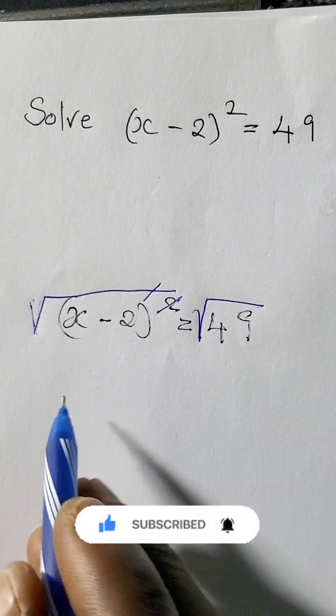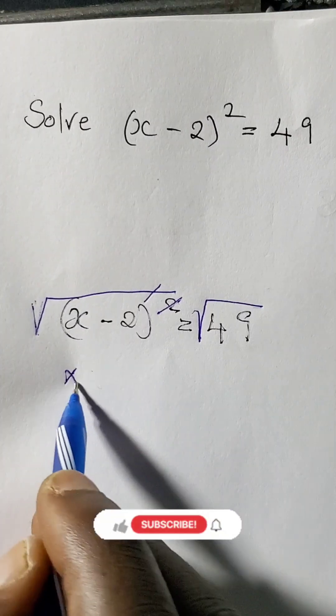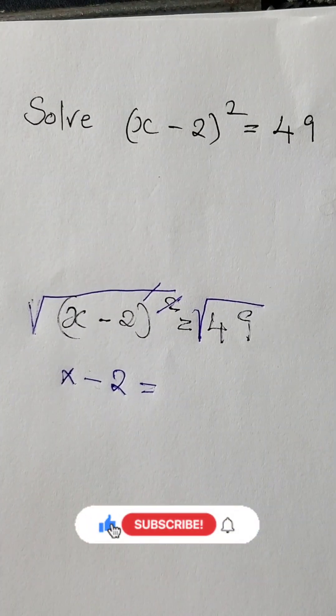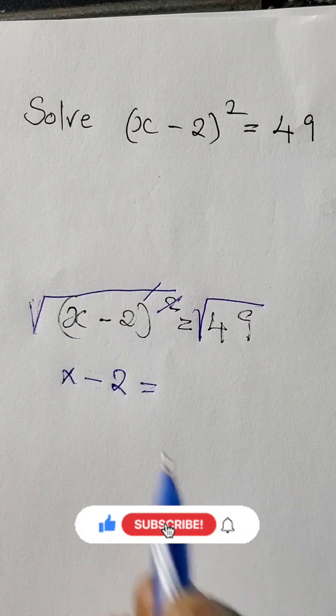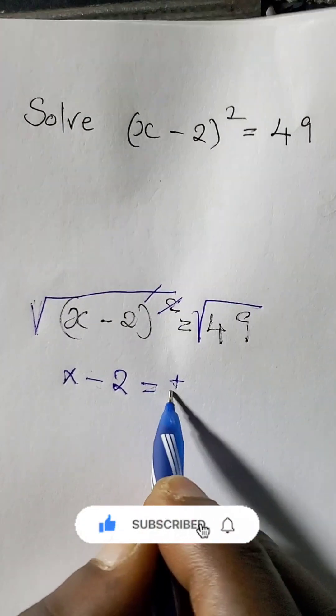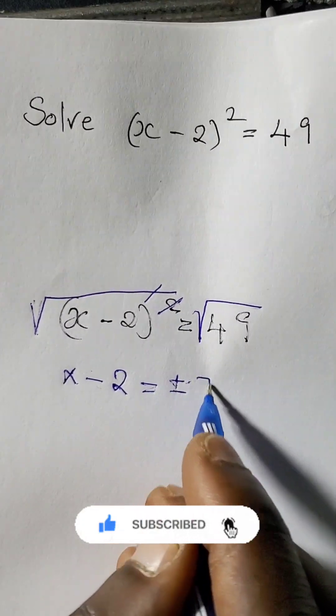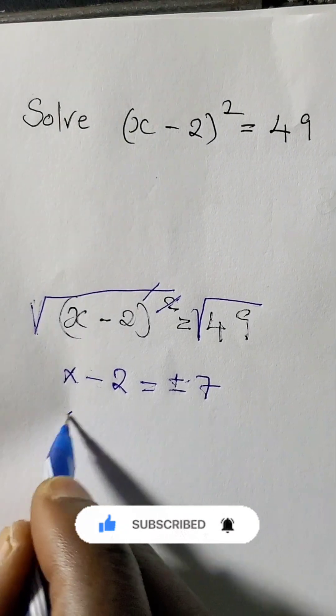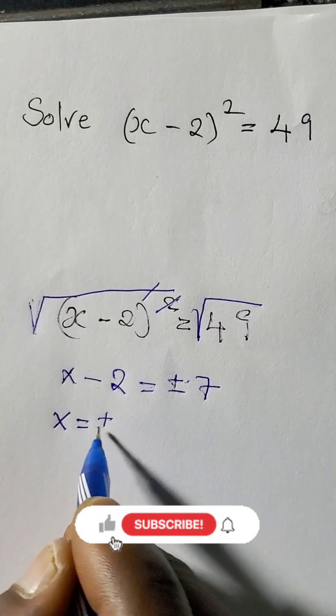Just remain with x - 2 equals the square root of 49, which can either be positive or negative 7. So therefore we have x equals positive 7 or negative 7.